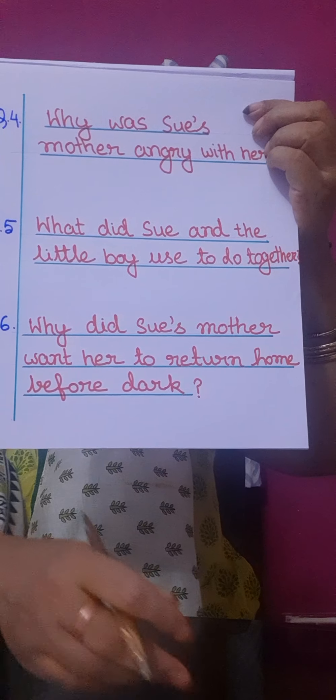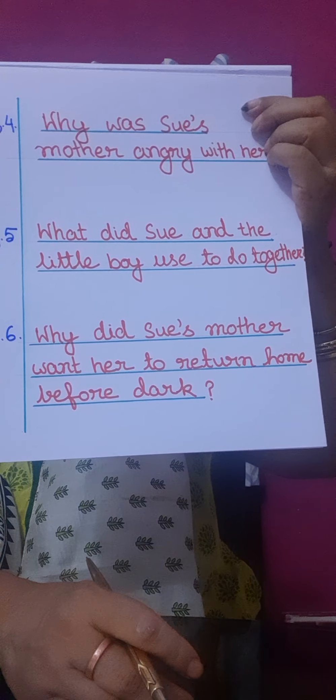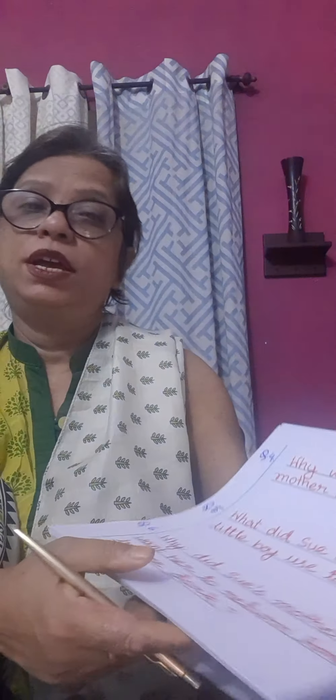And the last question is: why did Sue's mother want her to return home before dark? Sue's mother wanted her to return home before dark so that Sue would not feel scared, would not feel frightened, would not feel afraid.